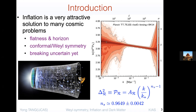The tilt means n_s is not equal to one; if n_s equals one it's a flat spectrum, which means it's scale invariant. So the power spectrum is nearly scale invariant — this is standard scale invariance, conformal invariance, or Weyl symmetry, which is an approximate symmetry during inflation. This is one motivation why people study this kind of symmetry.